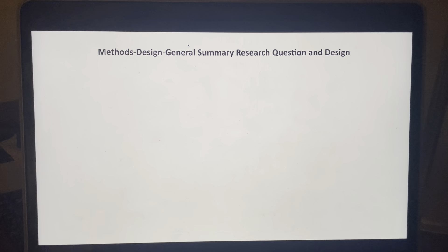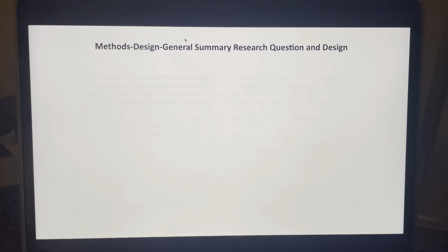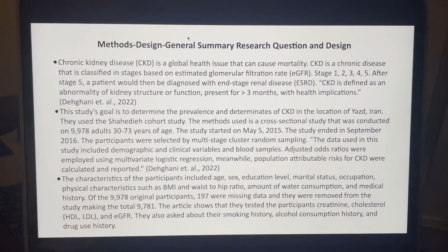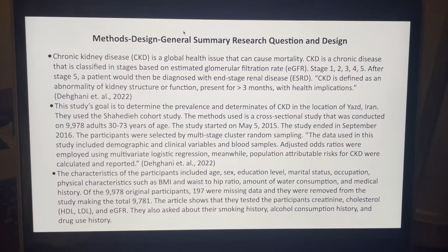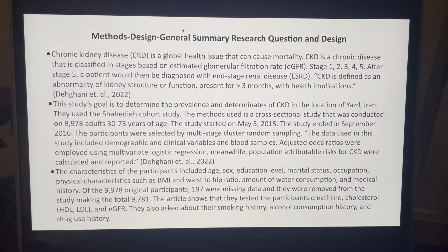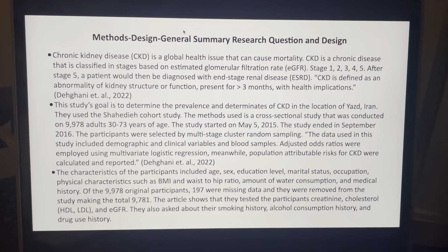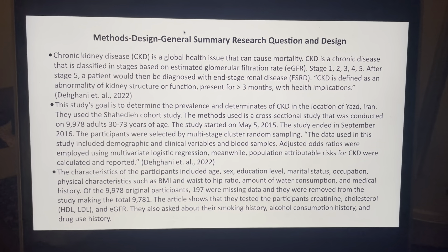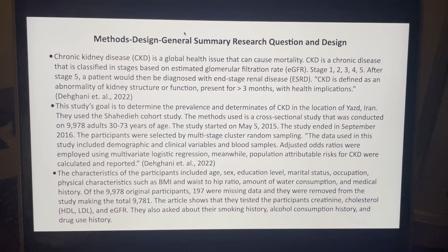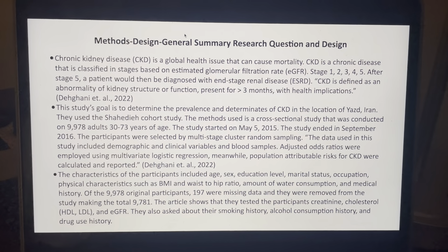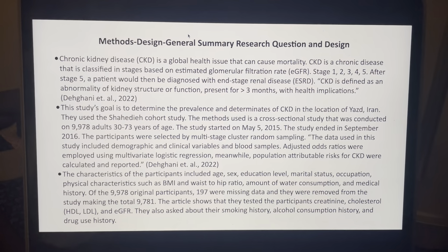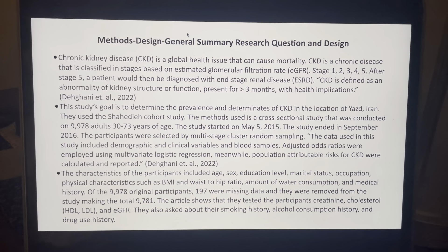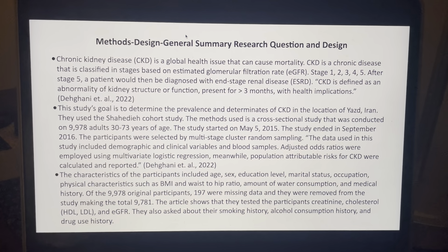We're going to go over the methods, the design, and general summary of the research question. Chronic kidney disease, or known as CKD, is a global health issue that can cause mortality. CKD is a chronic disease that is classified in stages based on the estimated glomerular filtration rate, or known as EGFR. It can come in stages 1, 2, 3, 4, or 5, and after stage 5, a patient would then be diagnosed with end-stage renal disease, or ESRD.